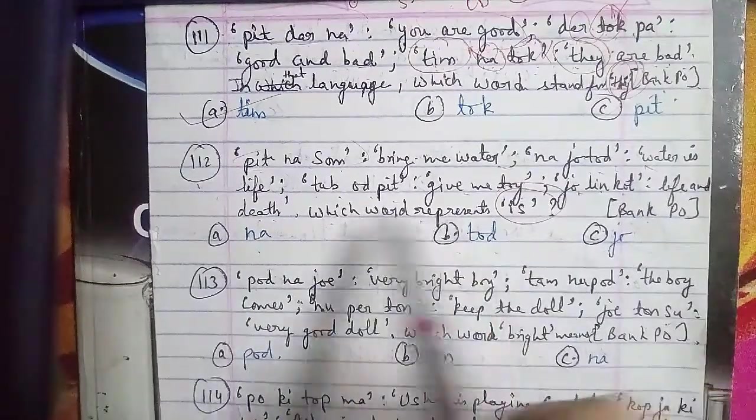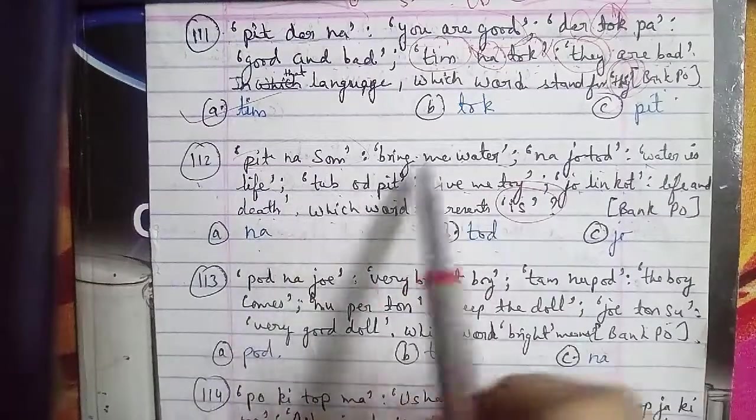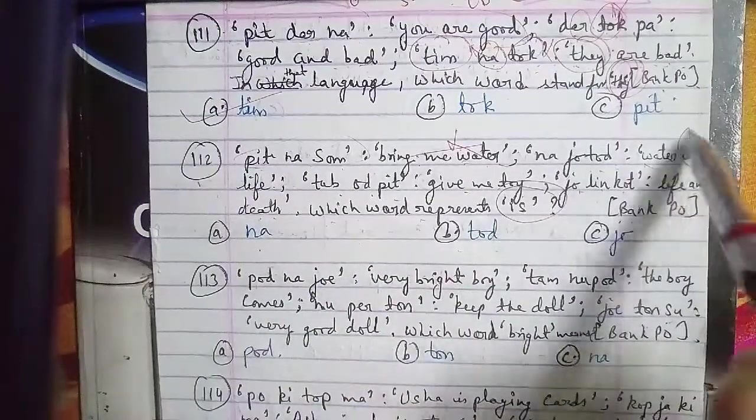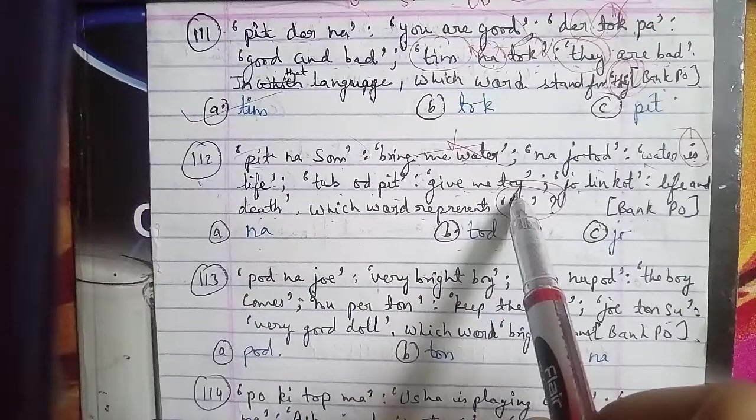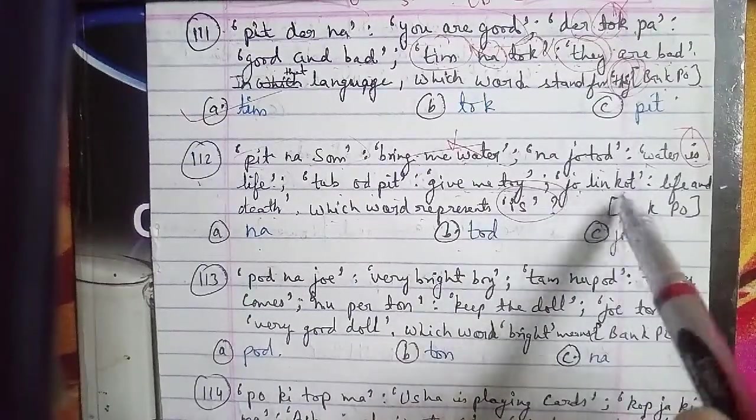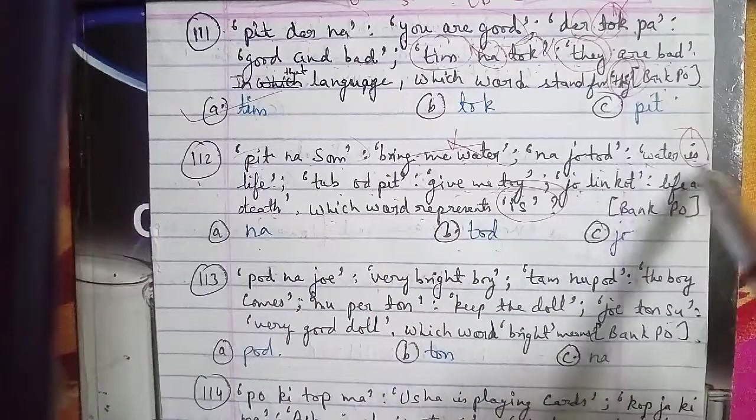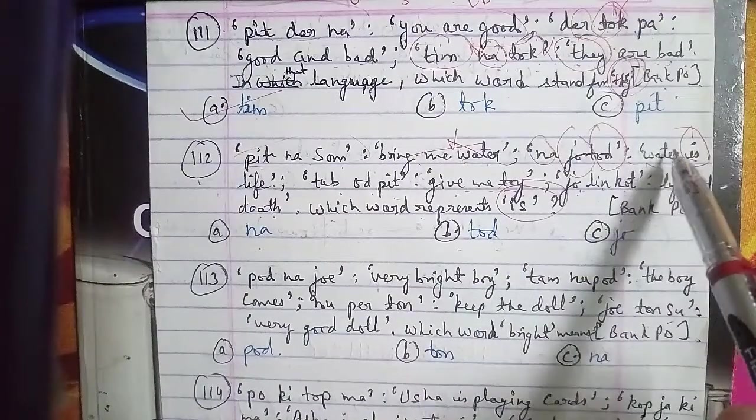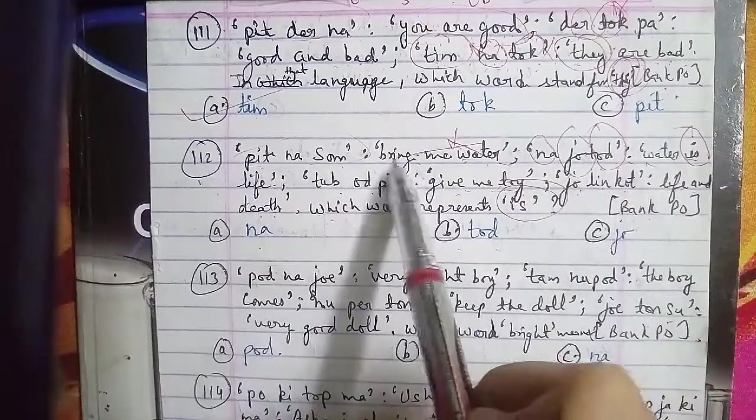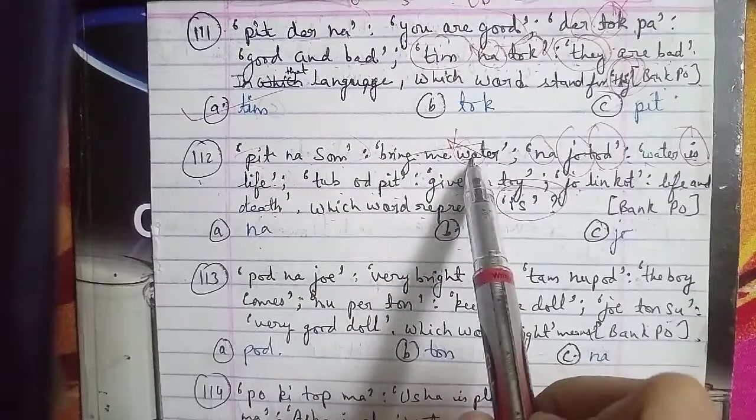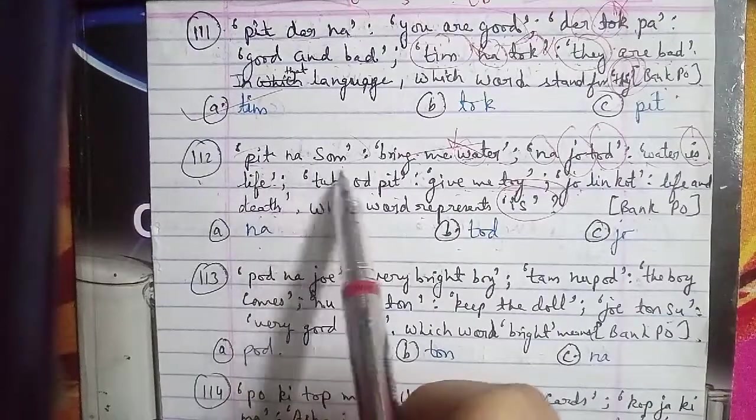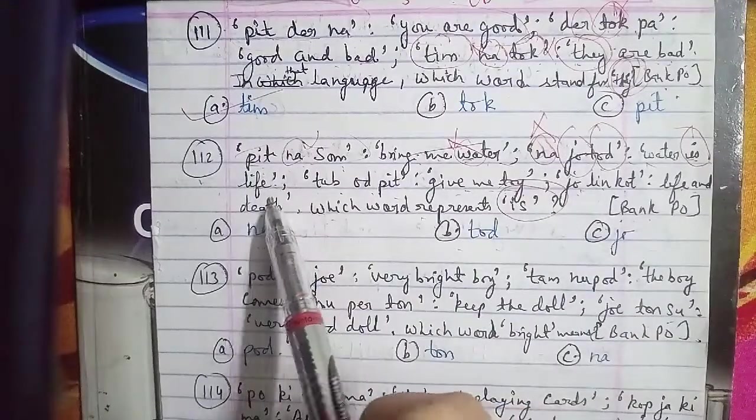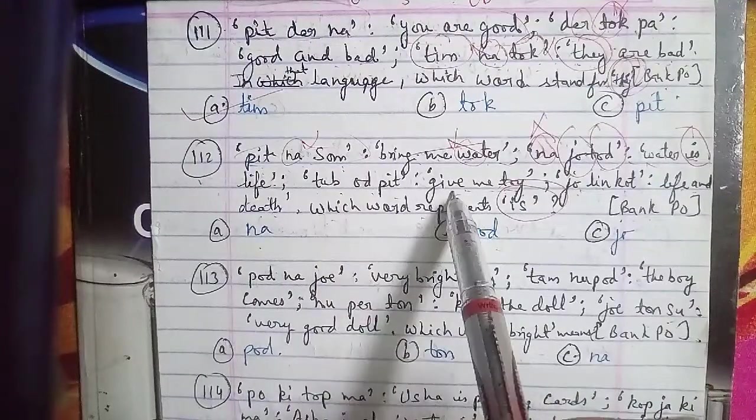We need to see where 'is' appears. It's in 'water is life'. Either na, jo, or tod will be the code. Let's check water - it appears in 'bring me water'. The common word is na, so na is coded for water. Now checking life - it appears in 'life and death' which is jo link cot. Jo is common, so jo is coded for life. The remaining tod is coded for 'is'. So option B is the right answer.